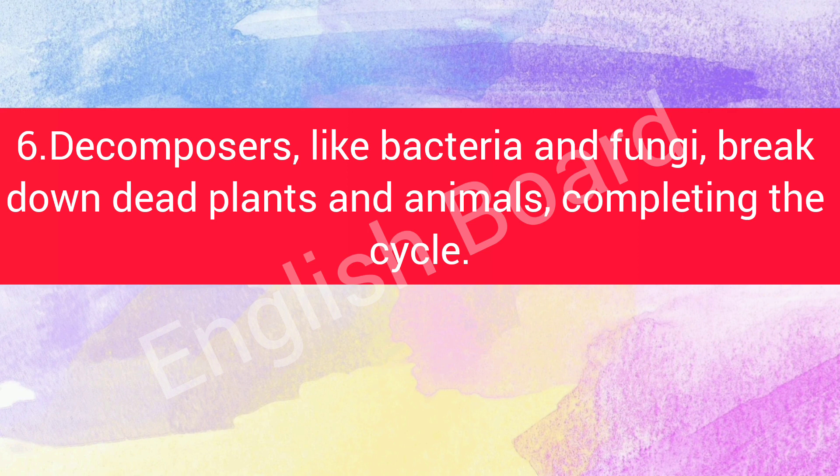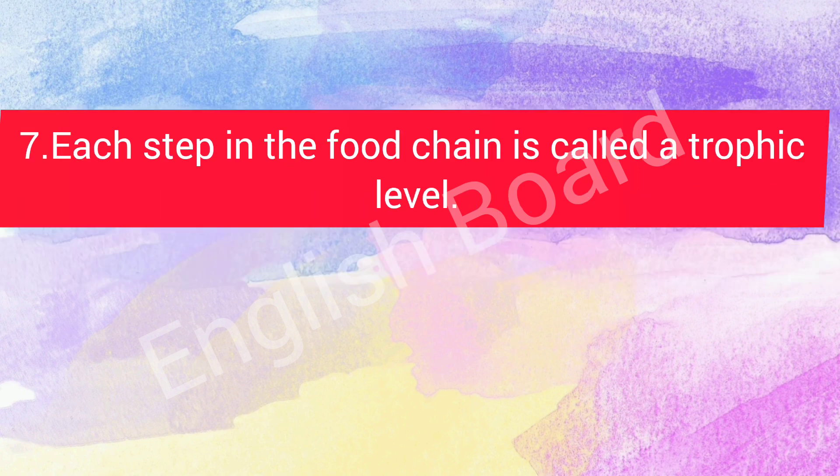Decomposers like bacteria and fungi break down dead plants and animals, completing the cycle. Each step in the food chain is called a trophic level.